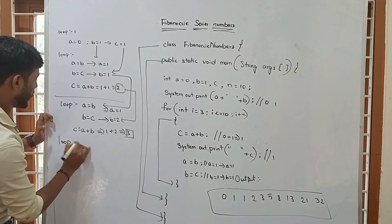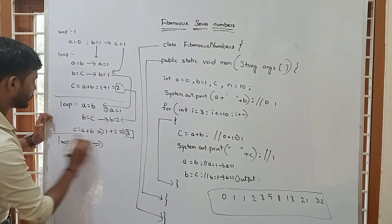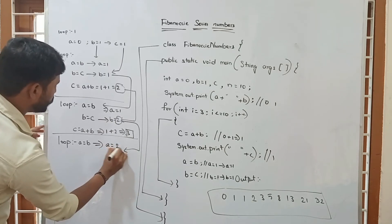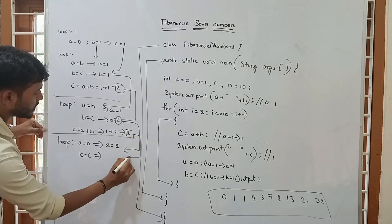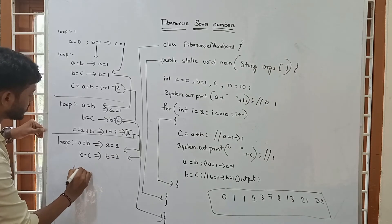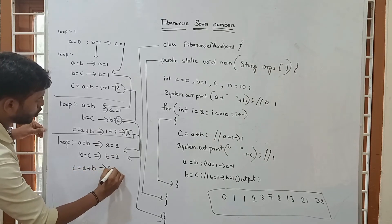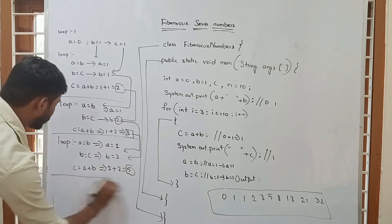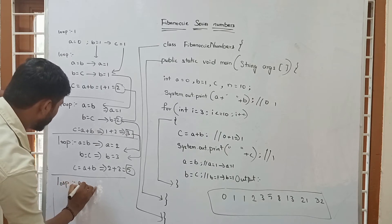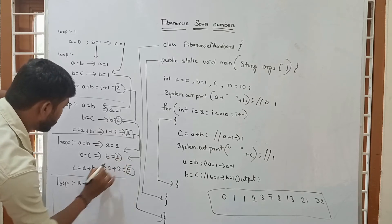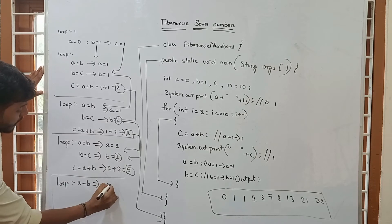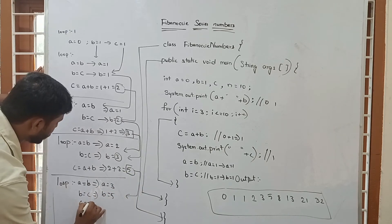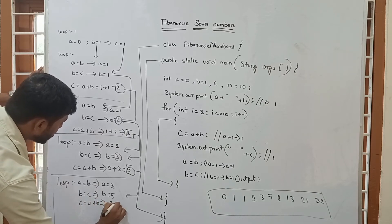Another iteration: A equal to B, so B was 3, so A equals 3. B equal to C means B becomes 5. So C equal to A plus B: 3 plus 5 equals 8. Again A equal to B, so A becomes 5. B equal to C means B becomes 8. Now C equal to A plus B: 5 plus 8 equals 13. And again: A equal to B, A becomes 8. B equal to C, B becomes 13. C equal to A plus B: 8 plus 13 equals 21.